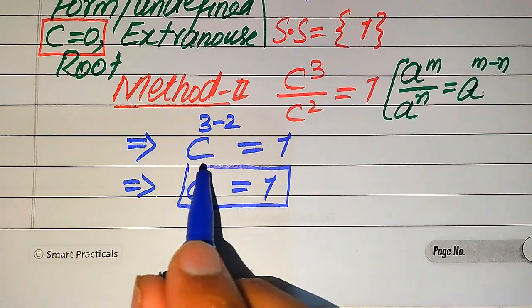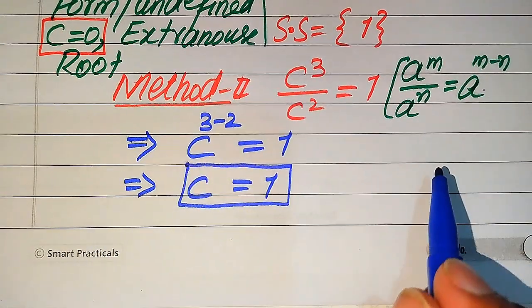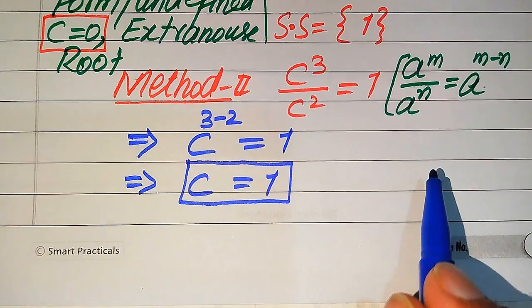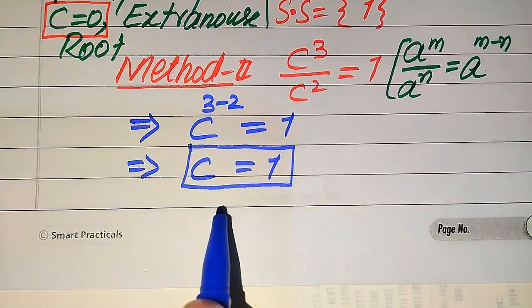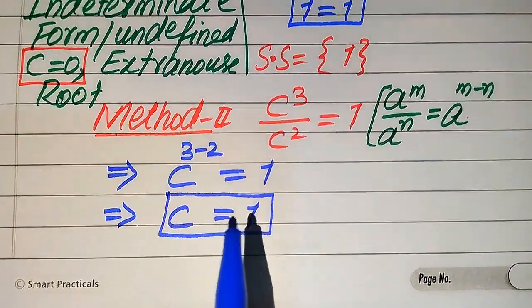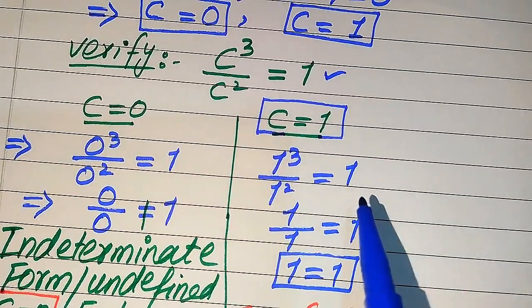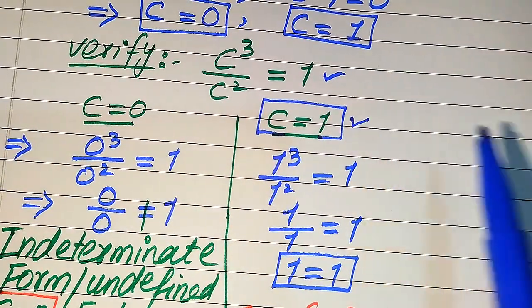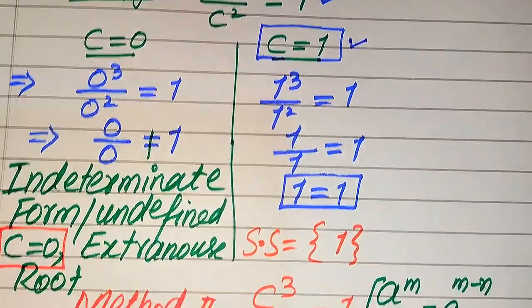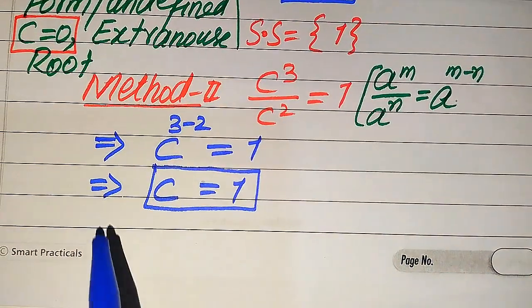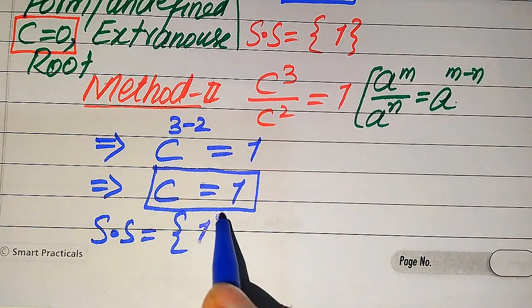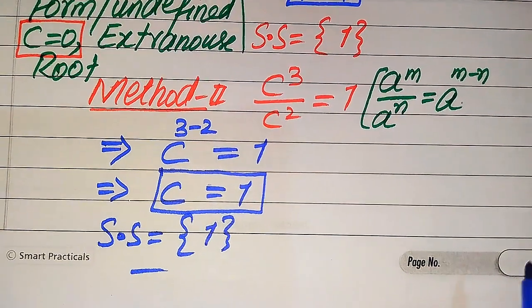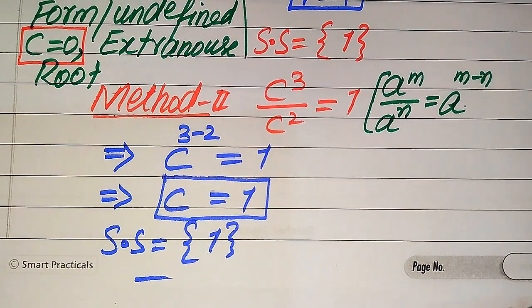In the second method we get only one root, C equals 1, which is the only solution of this equation. As already verified in the first method, C equals 1 satisfies the given equation. So C equals 1 is the only solution and this is our final answer. Thank you so much for watching this video. Please subscribe to my channel for more exciting videos.